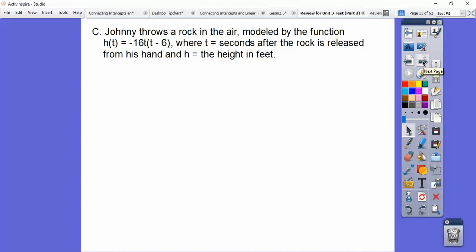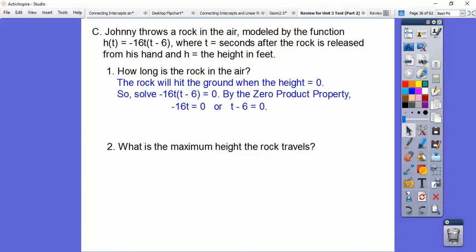So Johnny throws a rock in the air, and it's modeled by this h of t, so that represents our height, negative 16t times t minus 6, where t is the seconds after the rock is released from his hand, and h is the height right there. So how long is the rock in the air? So here's the rock. Johnny goes, throws it up, comes back down, and then so when it comes back down, that's when the height is zero. So we're going to set this equal to zero, and then use our zero product property. So by the zero product property, we set this factor equal to zero and set that guy equal to zero. 16 times zero equals zero, same with negative 16 times zero equals zero. So that's before he threw it. It was at height zero, so time equals zero is when before he threw it, and then after, what, six seconds? Always answer the question. So it's after six seconds, that's how long that rock was in the air.